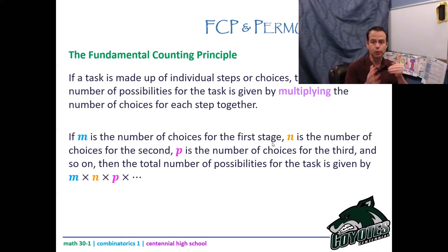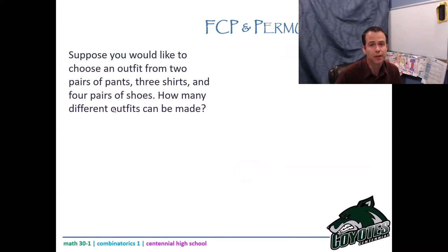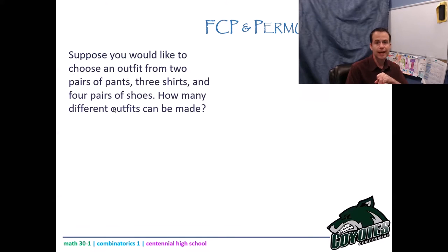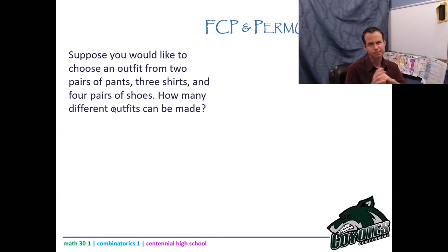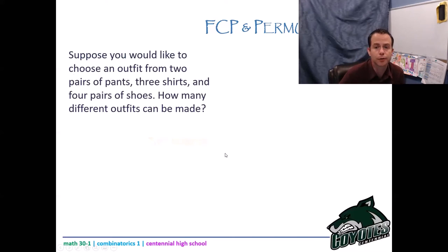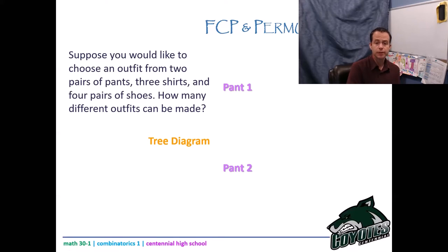You may read that and say that's not easy at all — yes, it is. Let's put it in perspective. You have been doing this before. Suppose you would like to choose an outfit from two pairs of pants, three shirts, and four pairs of shoes. How many different outfits can be made? You could have been asked this question in grade eight or nine in a probability unit. What they would have done is gotten you to draw a tree diagram. I have two pairs of pants, so let's label them pant one and pant two — so far, two options.